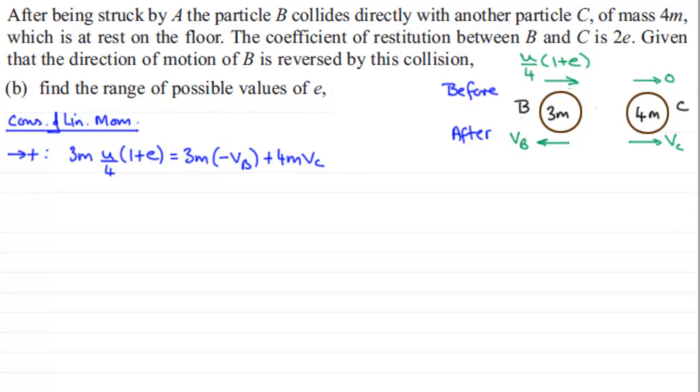In each of these terms I notice we've got an M, so we can cancel that out. If I multiply throughout by 4 to eliminate the 4, we're left with 3U multiplied by 1 plus E, which expands to 3U plus 3UE, equals minus 12VB plus 16VC. We're going to call this equation 1.